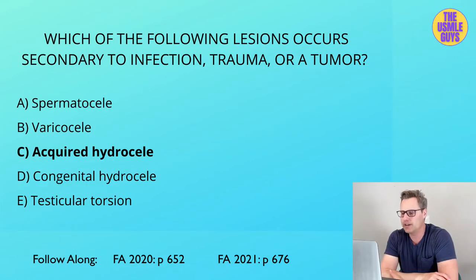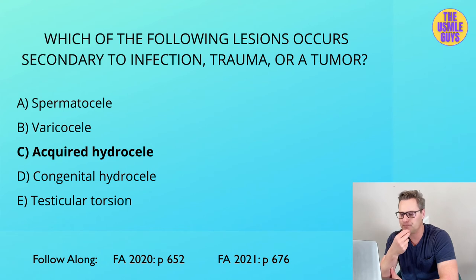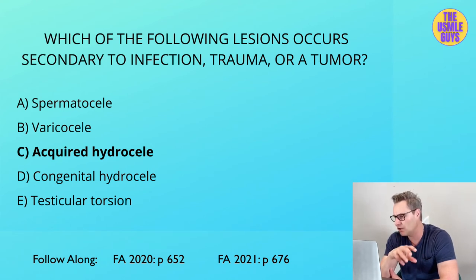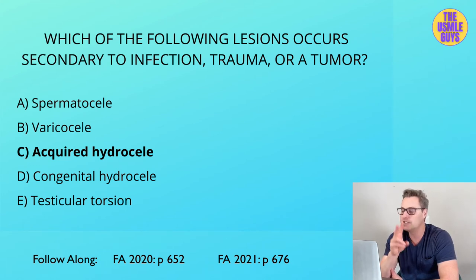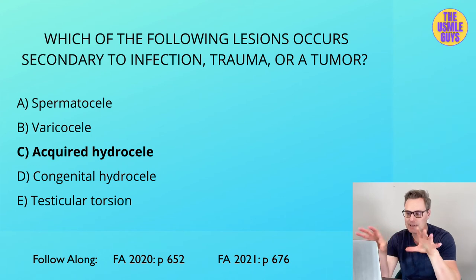The correct answer here is C. Let's take a look at the benign scrotal lesions, which are testicular masses that can be transilluminated. These include the congenital hydrocele, the acquired hydrocele, and the spermatocele. Although the varicocele is the most common cause of scrotal mass, remember that it does not transilluminate — so on exam day, if they mention transillumination versus non-transillumination, keep these separate.